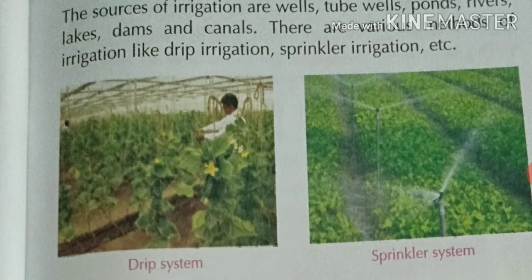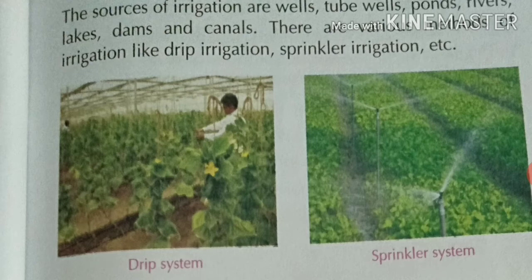The sources of irrigation are wells, tube wells, ponds, rivers, lakes, dams, and canals. From these sources we can irrigate our fields. There are various methods of irrigation like drip irrigation and sprinkler irrigation. These two methods are very important because by using them we do not waste water and we supply a good amount of water to our fields.